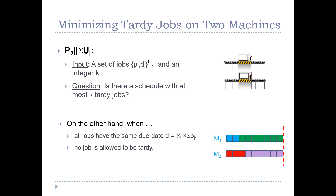On the other hand, when all jobs have the same due date equal to exactly half the total processing time and no jobs are allowed to be tardy, as in our previous example, this problem is exactly the well-known partition problem, which is known to be NP-hard in the weak sense.